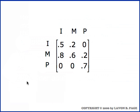The population dynamics will be described by a three-by-three matrix where one of the rows and one of the columns is labeled I for the immature group. The second row and second column represent the mature individuals, and the third row and third column correspond to the post-fertile individuals.